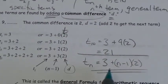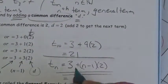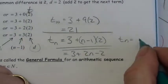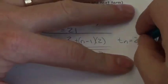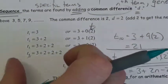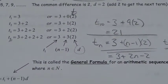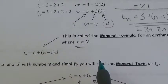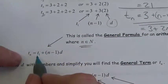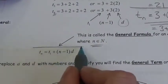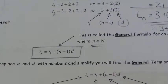So Tₙ equals three plus (n minus 1) times two. We wouldn't leave it like that — we distribute the two through and simplify to get Tₙ equals 2n plus 1. That is the simplified general term. In general, the formula for an arithmetic sequence is Tₙ equals T₁ plus (n minus 1) times d, where N is an element of the naturals. That is the general term or nth term of an arithmetic sequence.